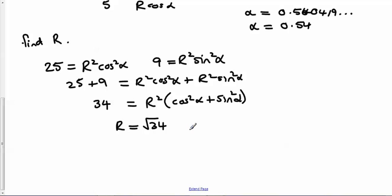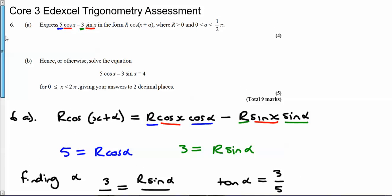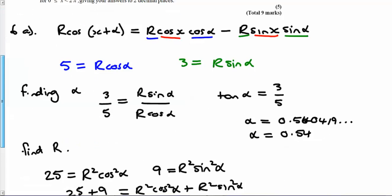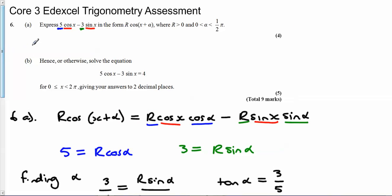What we're actually able to do is go back to the beginning and say that 5 cos x minus 3 sin x can be written in the form R, which is square root of 34, times cos of x plus alpha, which is 0.54. And that's what's required for part a.